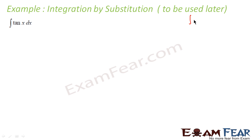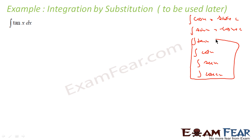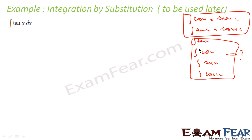Till now, we know that integration of cos x is sin x plus constant, and integration of sin x is minus cos x plus constant. But we don't know integration of tan x, cot x, sec x, and cosec x. We know differentiation of all these, but we don't know integration of all these. We know the function whose differentiation is cos x — that is sin x — and the function whose differentiation is sin x — that is minus cos x. So we know these two by reverse differentiation, but these other values we don't know.